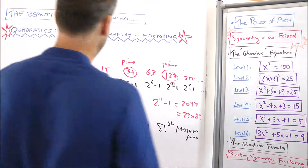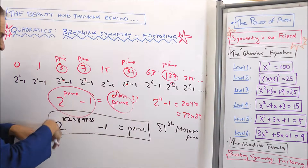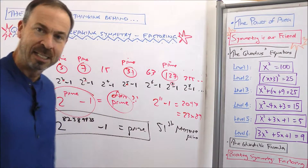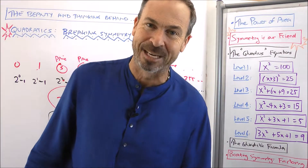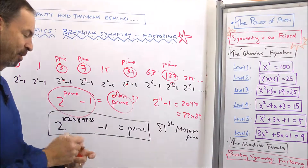By the way, this is a huge number. If I could write this one out and actually work it out, it's about 24 million digits long. It's a huge prime.